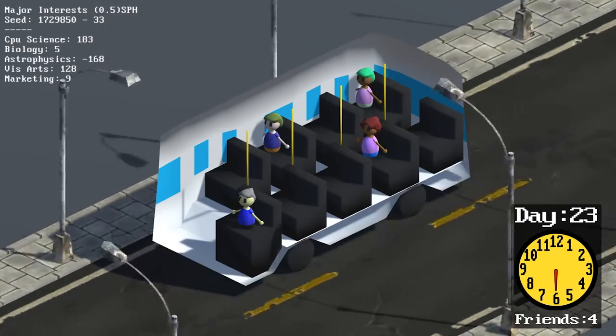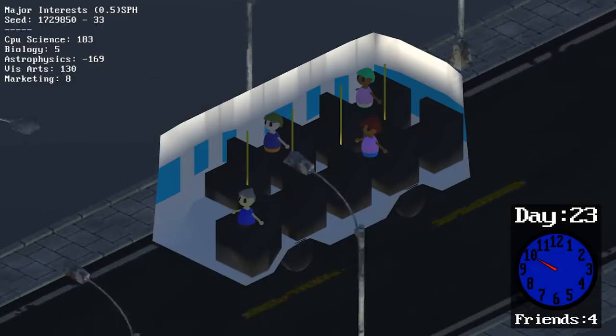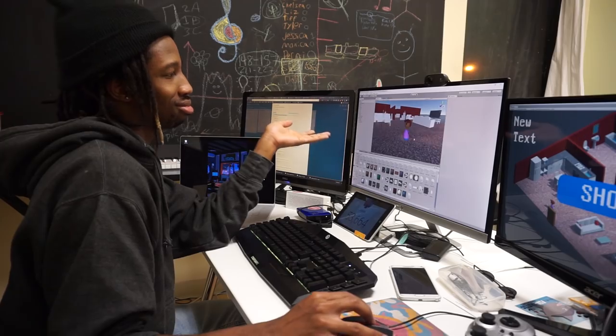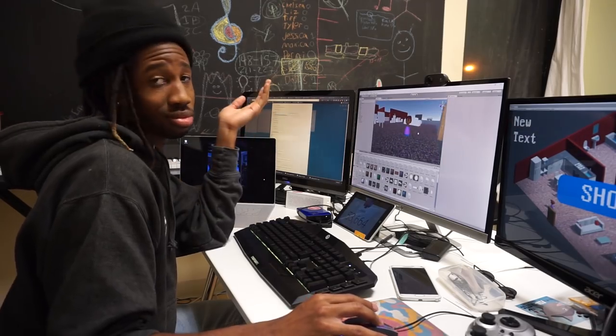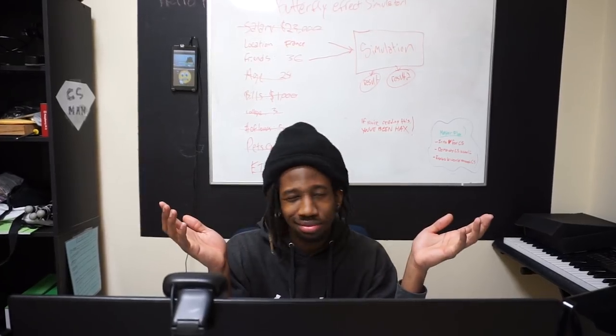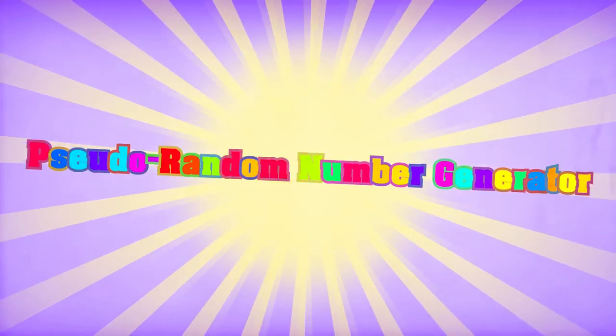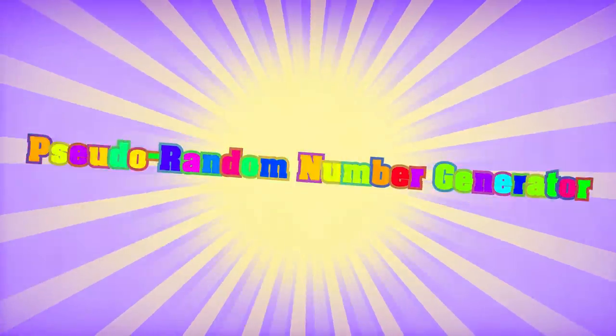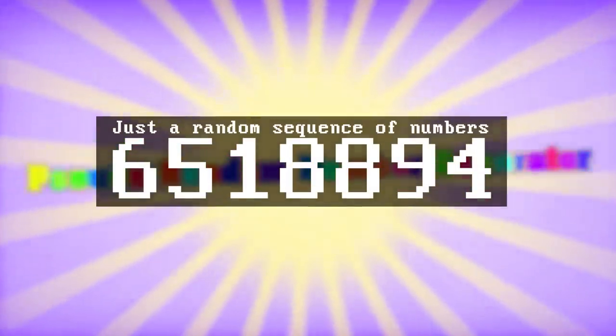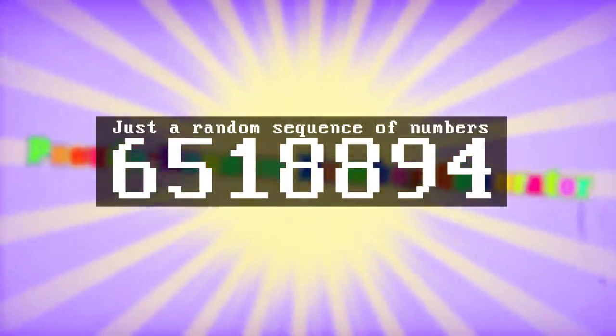But the people that she befriends over the years will also influence her with their own likes and dislikes. So the major she ends up declaring is anyone's guess. Now, what does this have to do with randomness and maybe thinking? Well, this entire simulator is based off of a pseudo-random number generator, which means we can use a number seed, that's this on screen, to decide Clarissa's entire life.